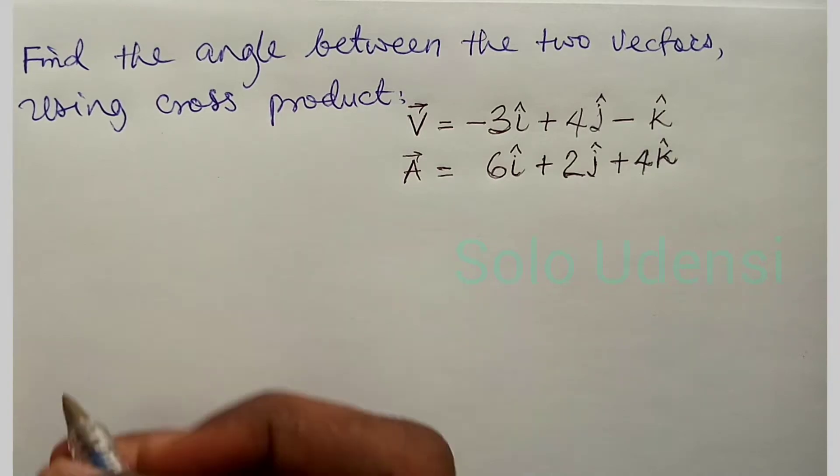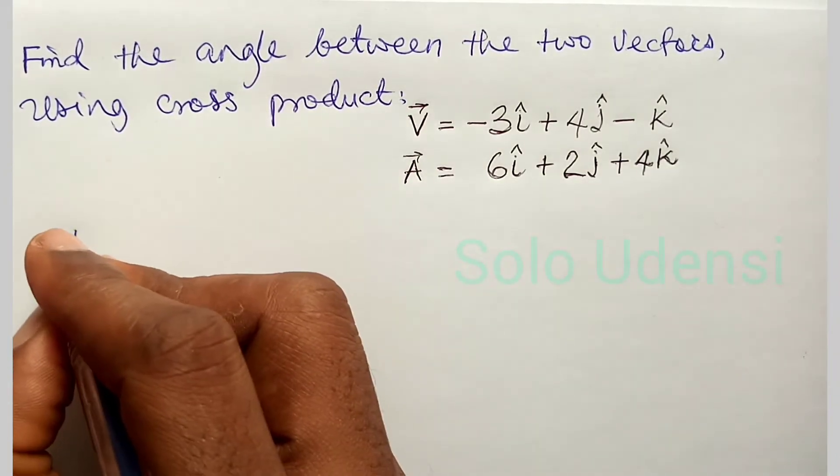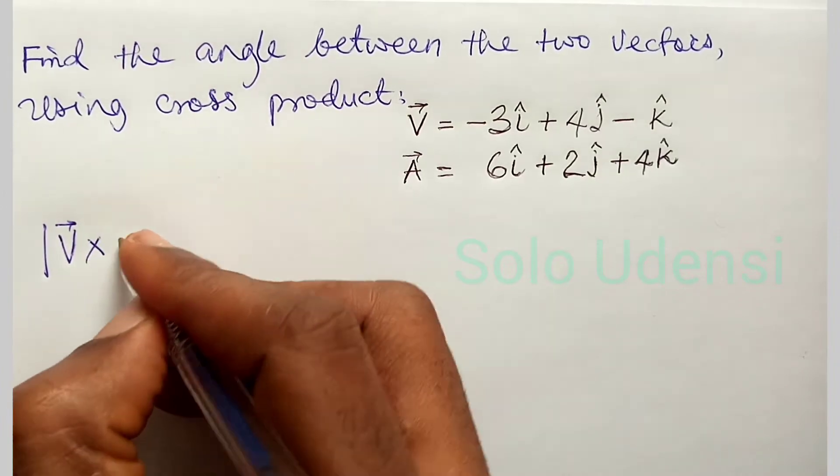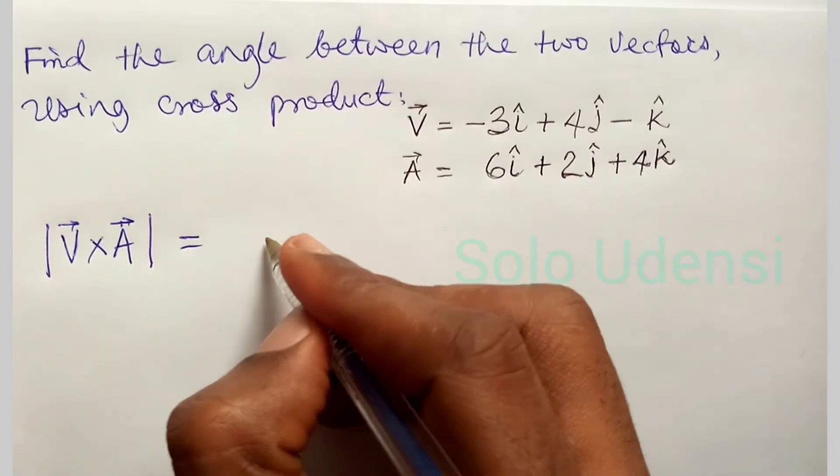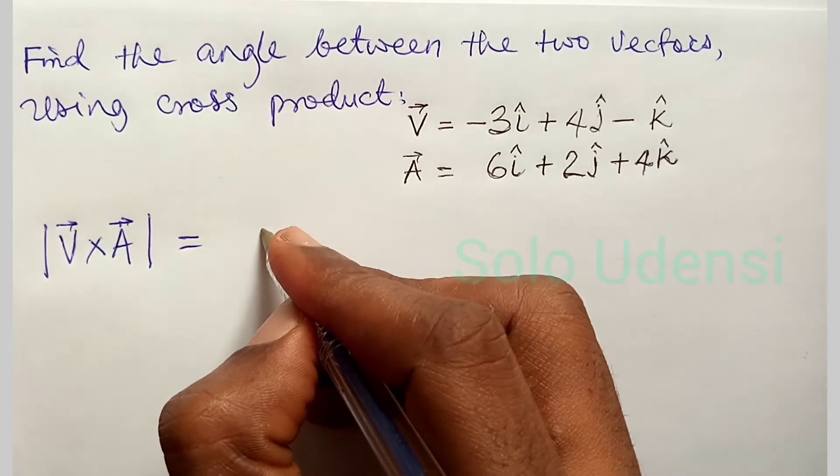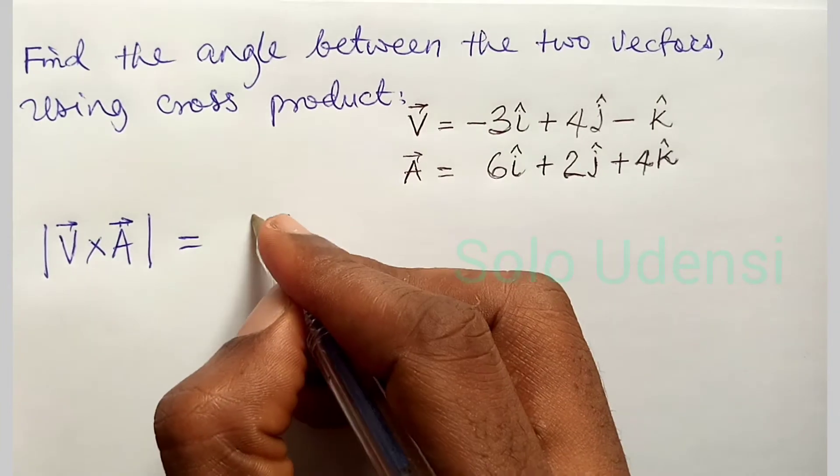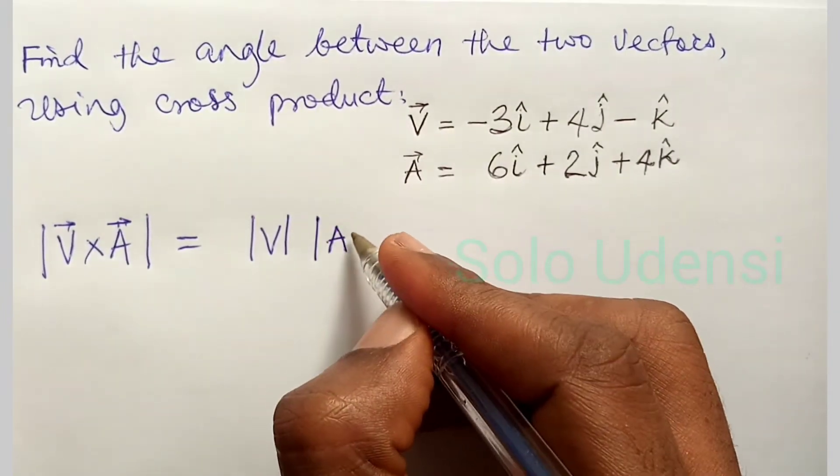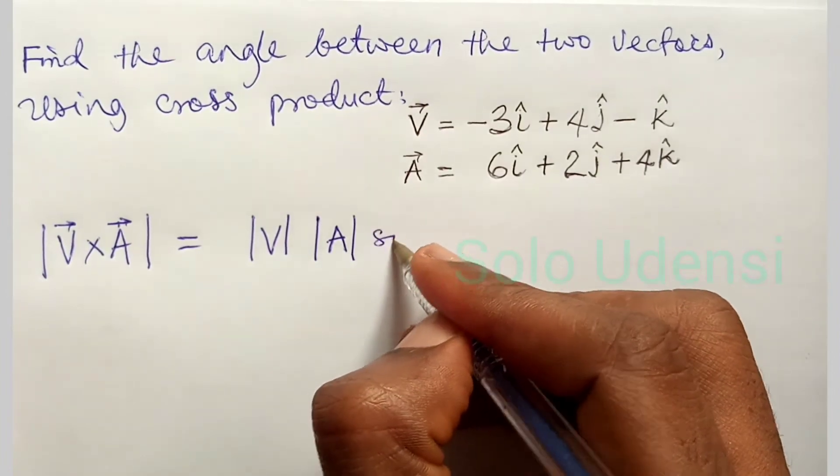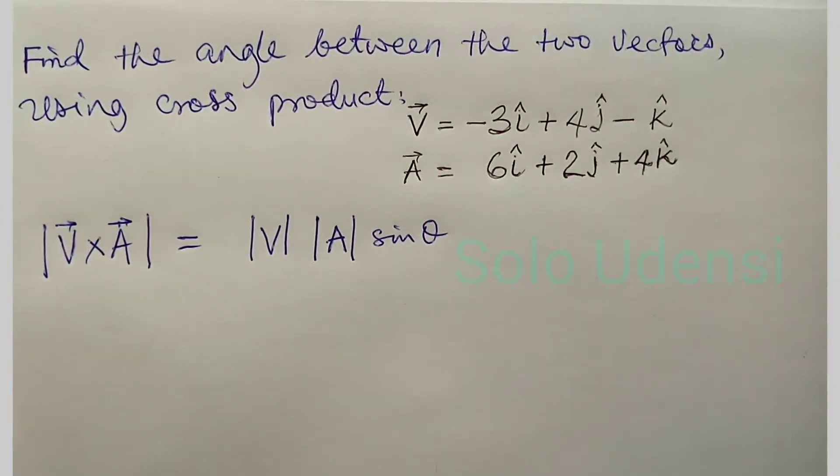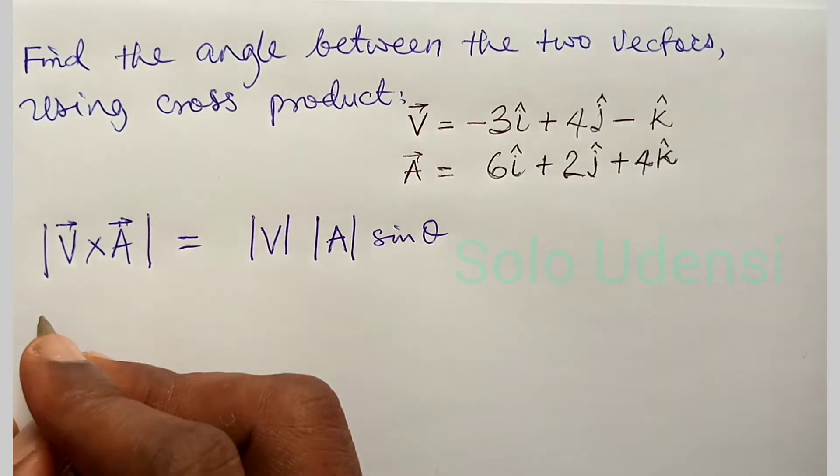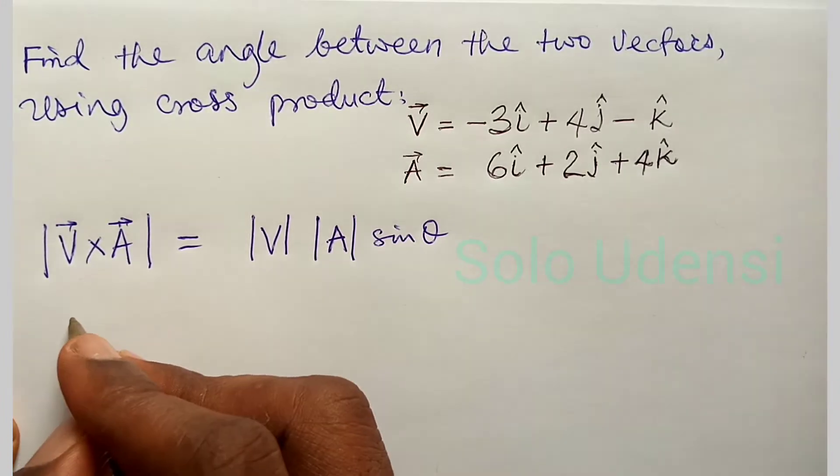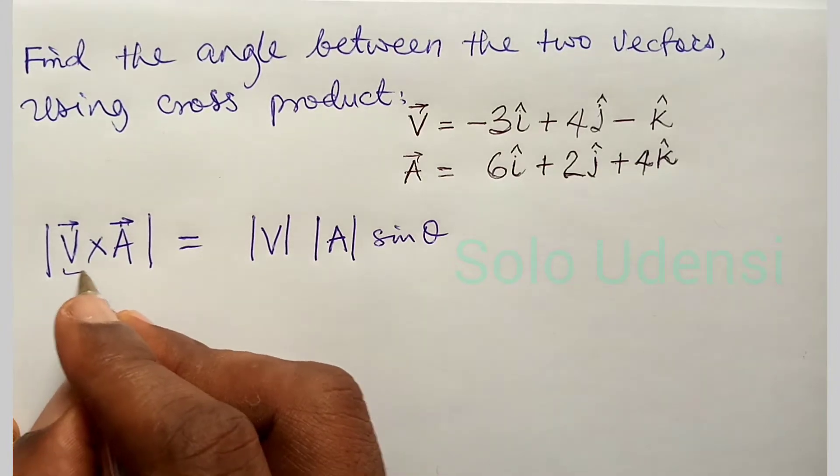is the magnitude of V cross A is equal to magnitude of V times magnitude of A sine theta. So okay, we have done this before in the last video, but let me express it. So this thing here, this thing here is, from here,